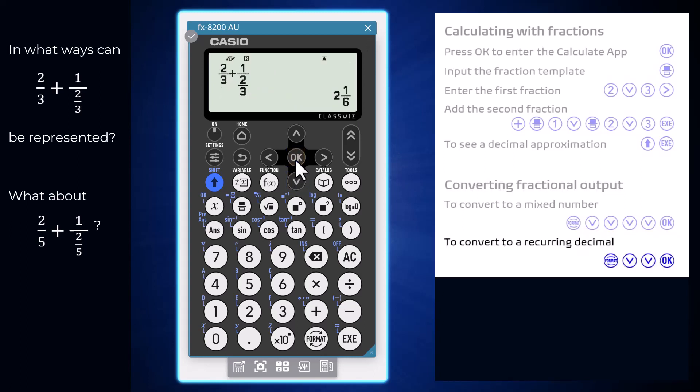Another representation of this number is as a recurring decimal. This too can be obtained by pressing format, arrowing down and pressing OK to make this selection. Note the dot above the 6 represents that this is the recurring part of the decimal.